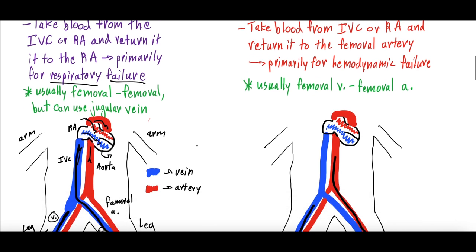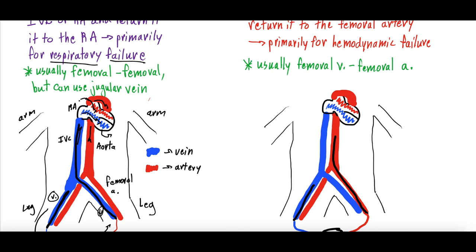VV ECMO is primarily for respiratory failure. We are delivering oxygenated blood to the right side of the heart — we are not bypassing the heart. That blood still gets pumped to the lungs, back to the left side, and then out to the body. The heart is working fine; it's the lungs that are not functioning. So we're delivering oxygenated blood to the right side of the heart, which then pumps it through the lungs and back out.